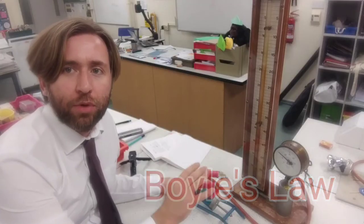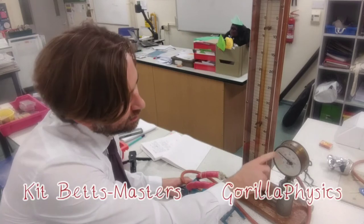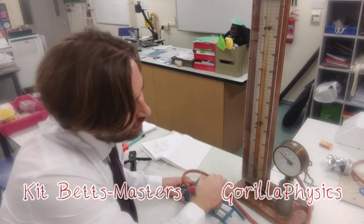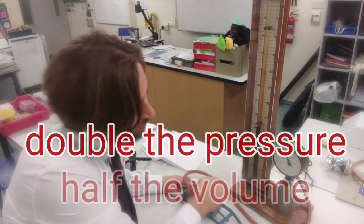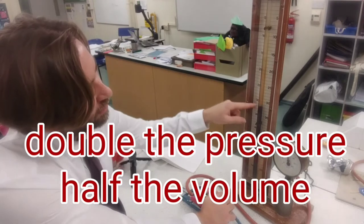This is our kind of standard Boyle's Law apparatus. I've got a Bourdon gauge here. It's currently reading 100 kilopascals. If I double that to 200, then I half the volume.